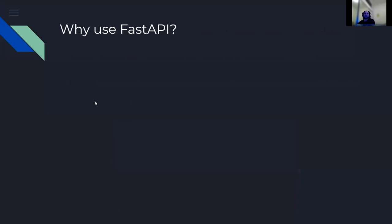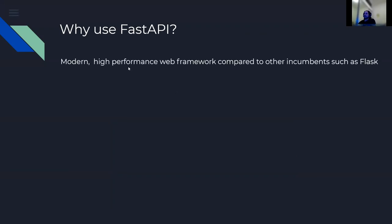Next, why would you use FastAPI? The first main point is that FastAPI is built on a modern high-performance framework compared to other Python web framework incumbents such as Flask. FastAPI is only a few years old, whereas Flask has been around longer and carries historical debt and backwards compatibility baggage. If you've ever used Flask and then start using FastAPI, you'll come to appreciate that difference. If you've never built anything before, this point is less pertinent, but take my word for it.